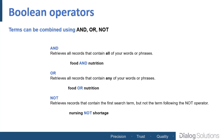Now let's turn to the ways we can combine search words, starting with the Boolean operators. Dialog uses all three of the Boolean operators — AND, OR, and NOT — and these work just as you would expect.